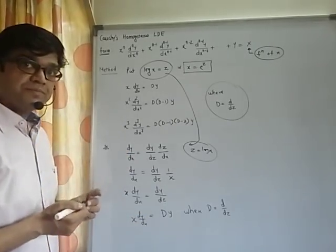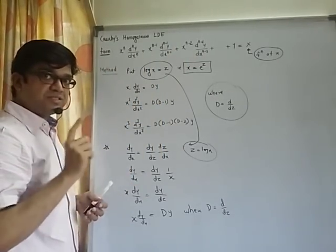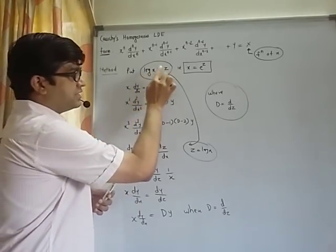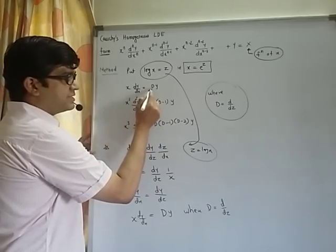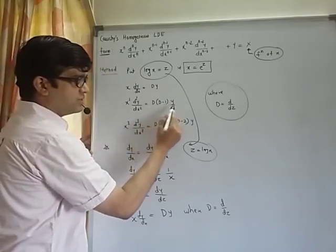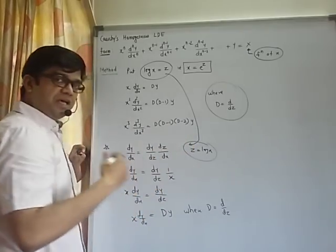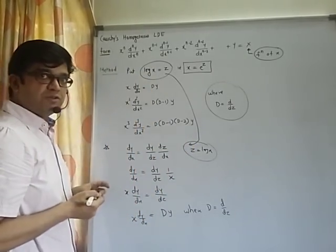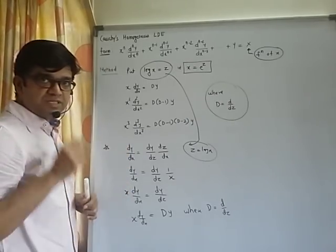So remember, first thing, identify the form of the differential equation and second, follow the method. Substitute log x as z and x into dy by dx, replace it by Dy, x square into d2y by dx2, replace it by this term, x cube into d cube y by dx cube, replace it by this term and so on. Once you do the substitution, it will become normal homogeneous linear differential equation. Note down, then we will see one example.